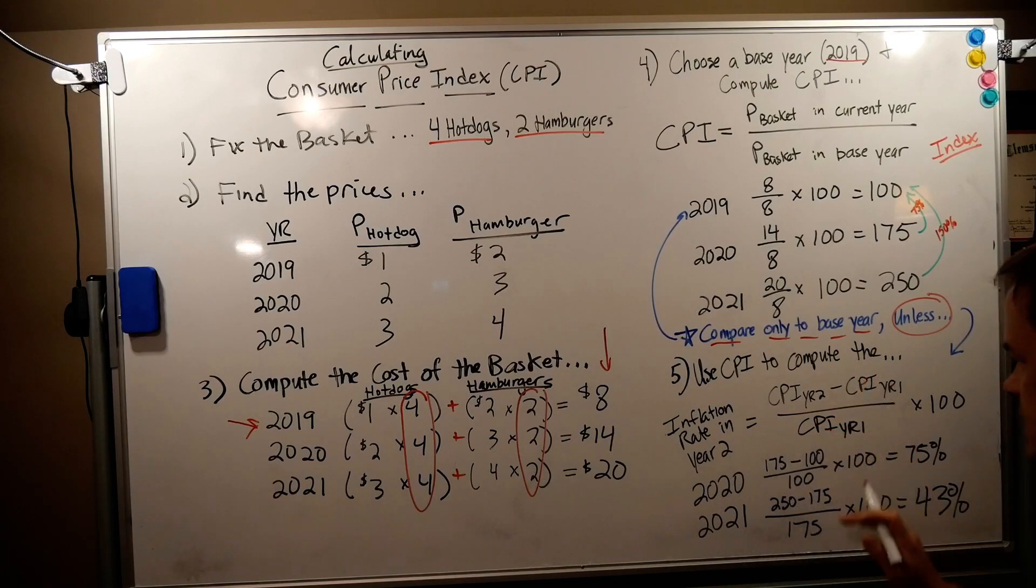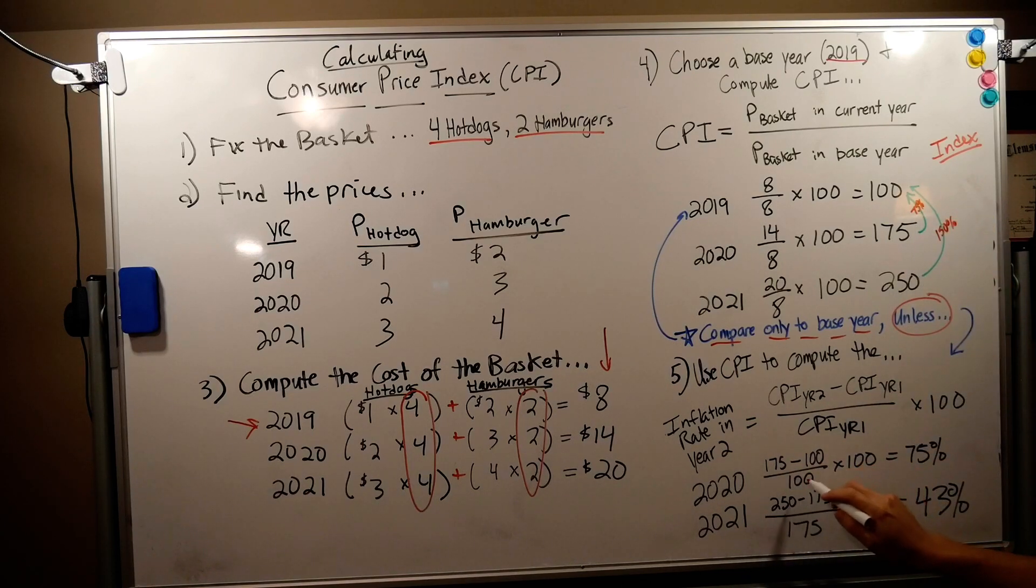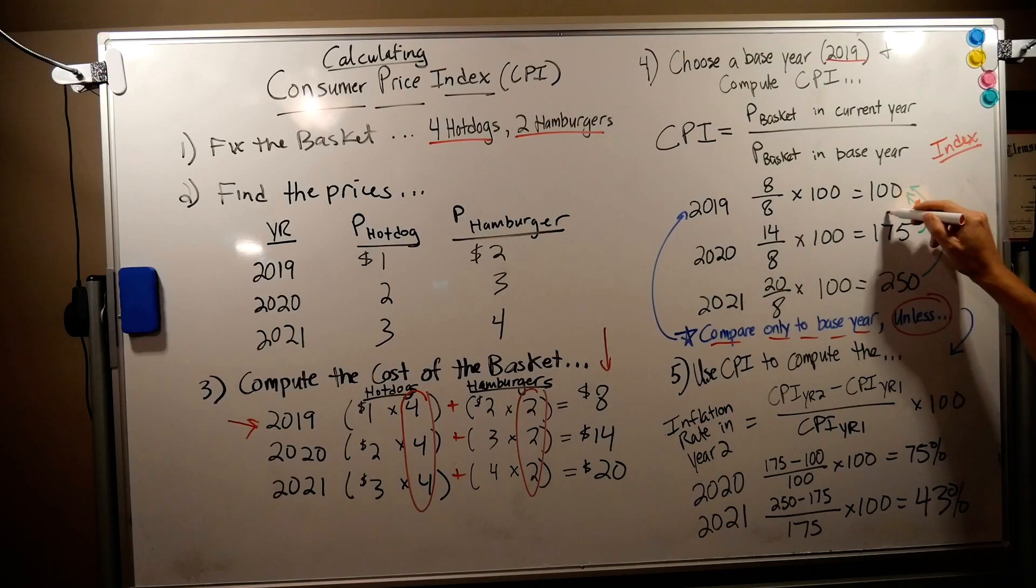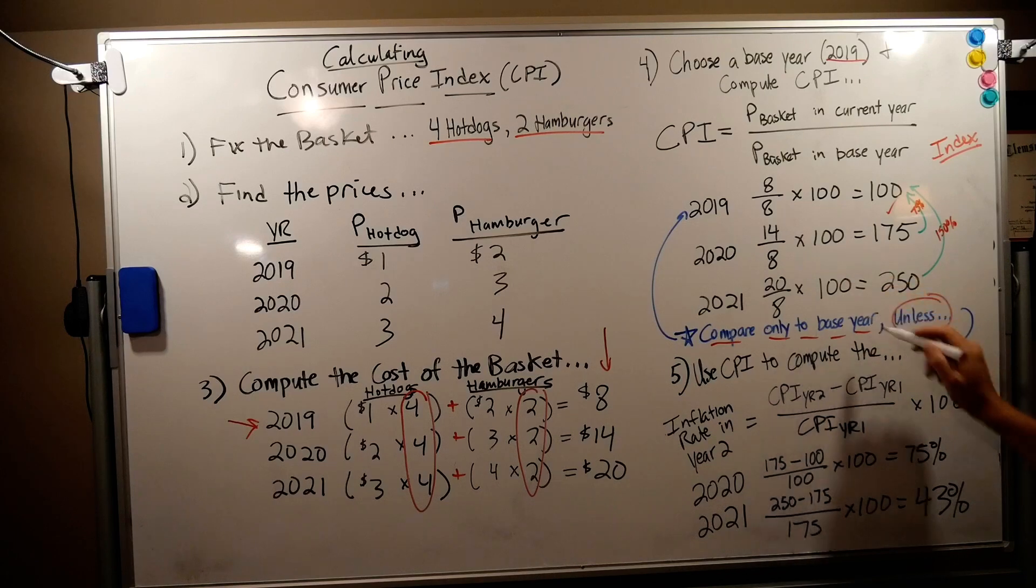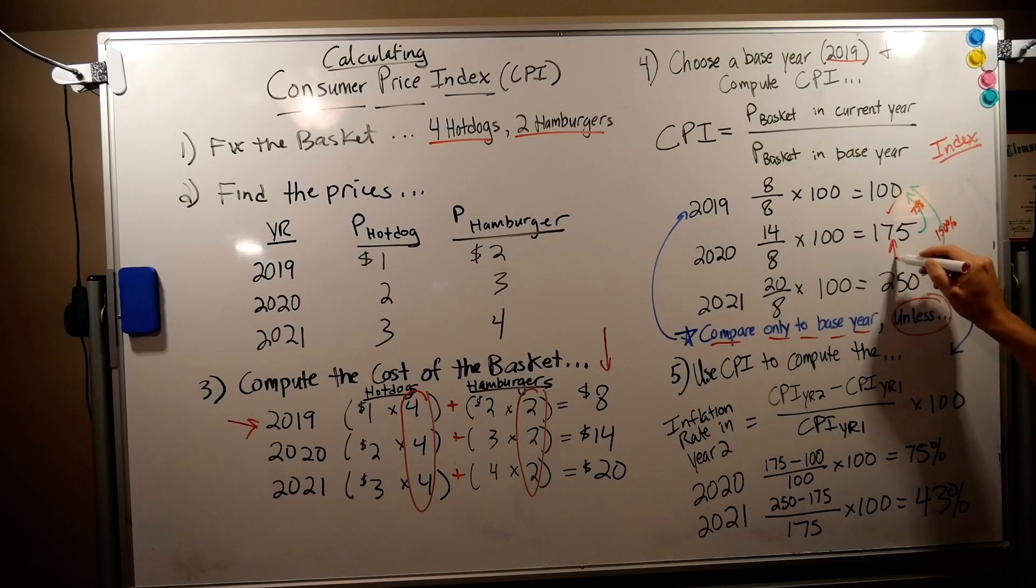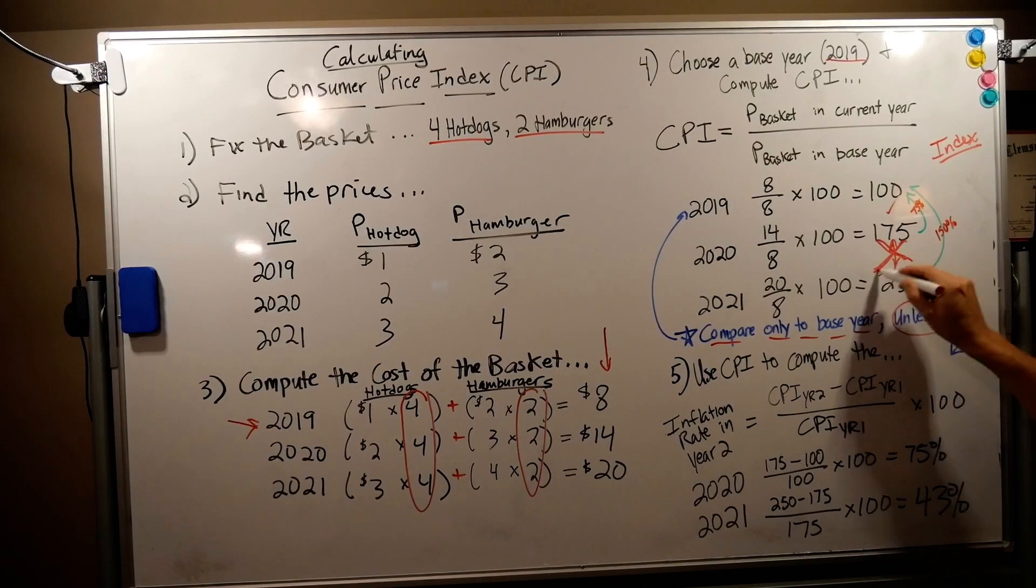In 2020, let's test it to make sure we get 75 percent again. 175 minus 100 divided by 100 times 100 to put it in the index, we get 75 percent. It passed the test. This is correct, we can use this now.